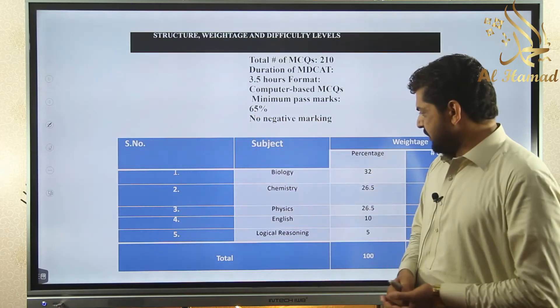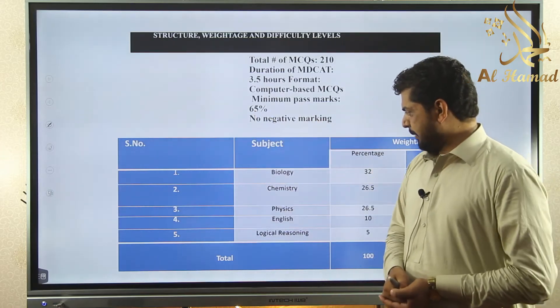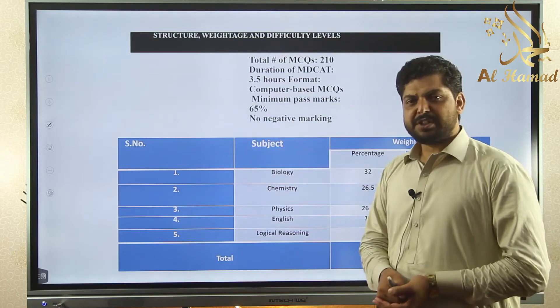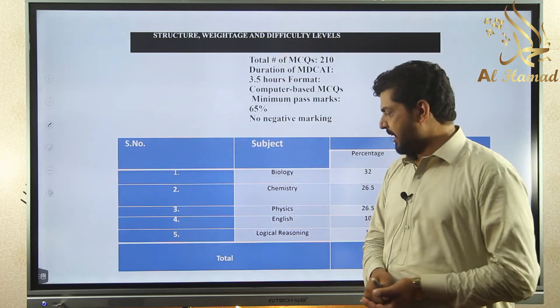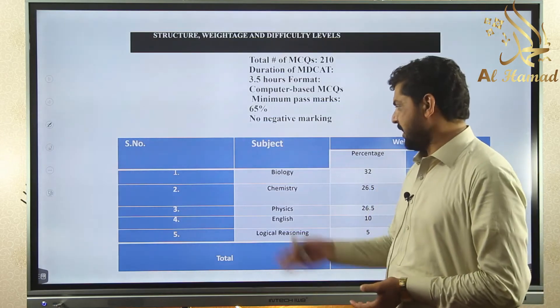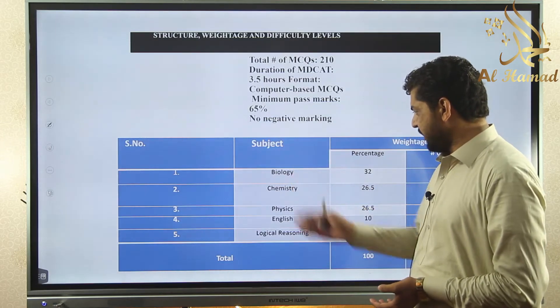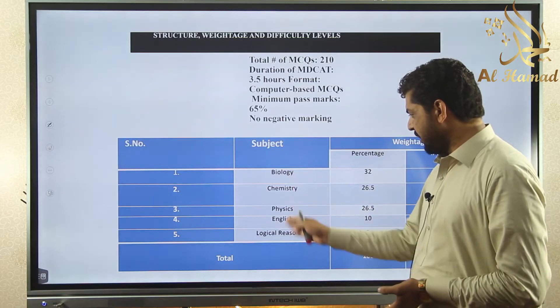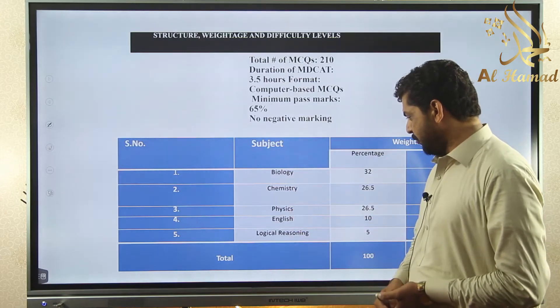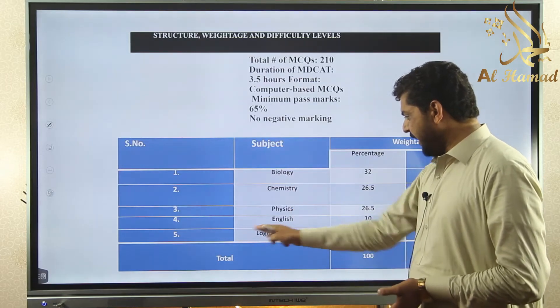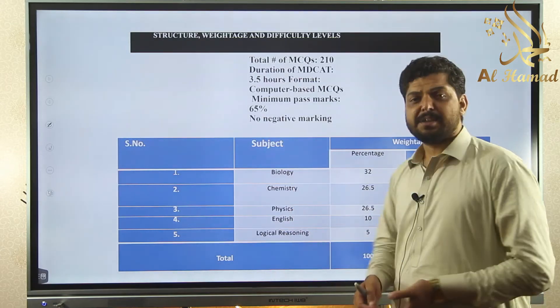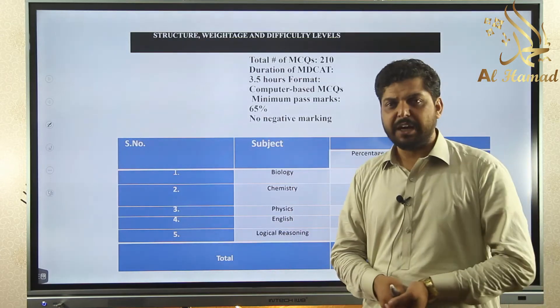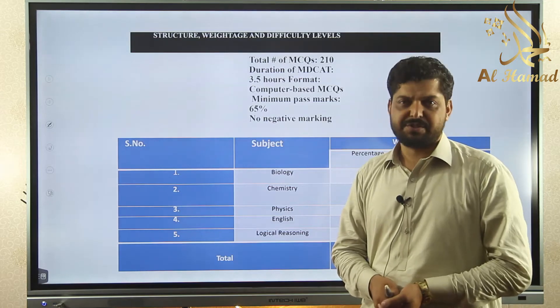The test includes five subjects. Biology is number one, second is Chemistry, third is Physics, number four is English, and the fifth subject is Logical Reasoning.